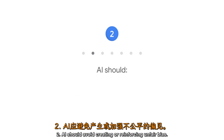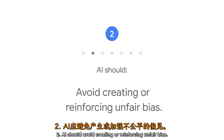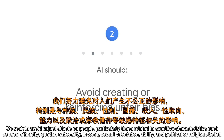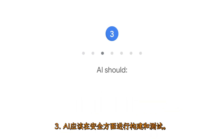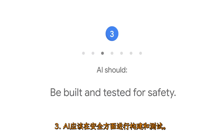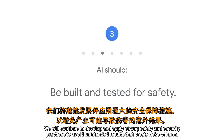Principle 2: AI should avoid creating or reinforcing unfair bias. We seek to avoid unjust effects on people, particularly those related to sensitive characteristics such as race, ethnicity, gender, nationality, income, sexual orientation, ability, and political or religious belief. Principle 3: AI should be built and tested for safety. We will continue to develop and apply strong safety and security practices to avoid unintended results that create risks of harm.